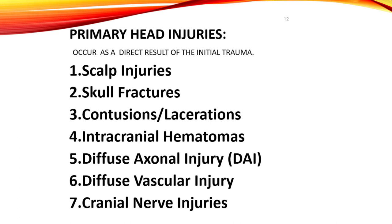Diffuse vascular injury involves damage to blood vessels, including lacerations, abrasions, or hematomas within the brain, which can lead to hemorrhage and potentially increased intracranial pressure, ICP. Cranial nerve injuries involve damage to one or more of the cranial nerves, resulting in specific neurological deficits.